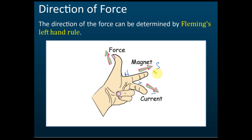Use your left hand — your thumb, index finger, and middle finger. The thumb represents the direction of the force, the index finger represents the direction of the magnetic field, and the middle finger represents the direction of the current. These three fingers are at right angles to each other.